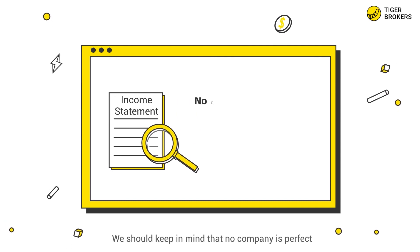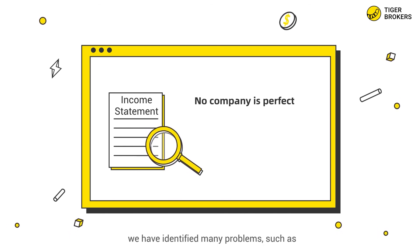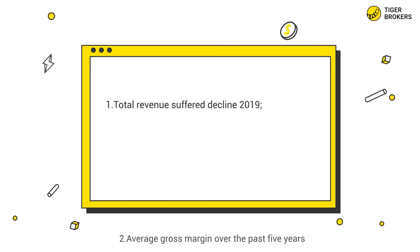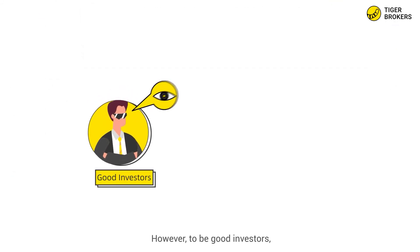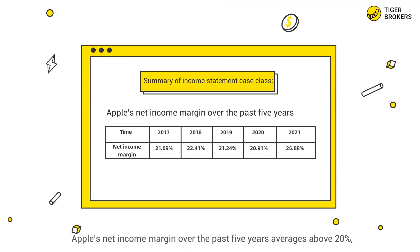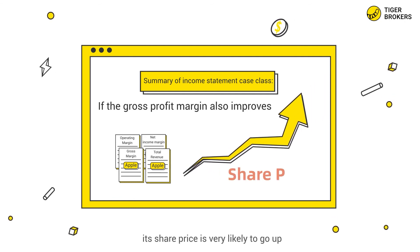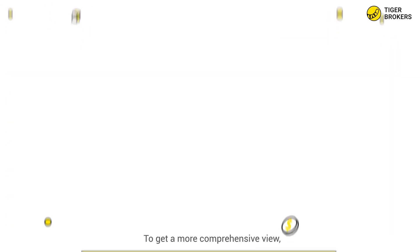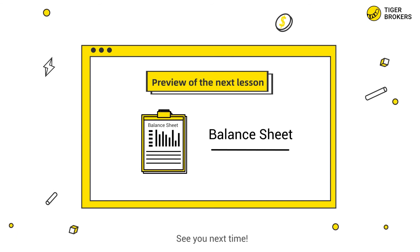After this analysis, we understand Apple's income statement better. No company is perfect — through our analysis we identified problems such as a revenue decline in 2019 and average gross margin falling short of the 40 percent benchmark. However, as good investors we must remain sharp and identify key ratios. Apple's net income margin averaging above 20 percent shows strong profitability. If gross profit margin also improves, its share price is very likely to go up. In the next lesson, I will walk you through the balance sheet. See you next time.